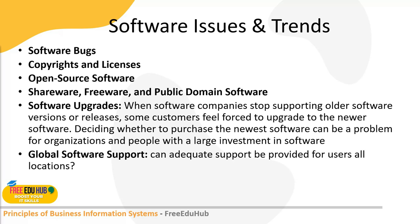Copyright and licensing define that software is intended to be used by the user who has purchased the license. There are different licensing terms: a single user license is for one user; a multi-user license is for a group of users in an organization; a concurrent user license is designed for network distribution and allows any number of users but only a specific number can use it at the same time; a site license permits the software to be used anywhere on a particular site, such as a college campus.